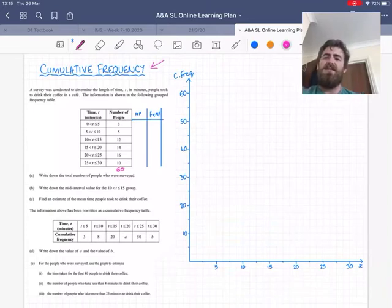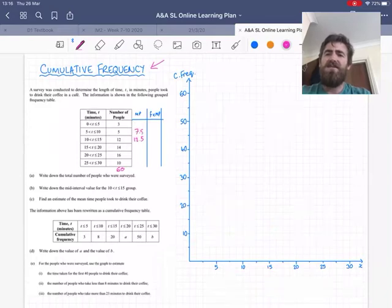Part B is to find the mid-interval value of the group from 10 to 15, or we might call it the midpoint. Just halfway between 10 and 15, that's 12.5. And that's usually a clue of what's to come.